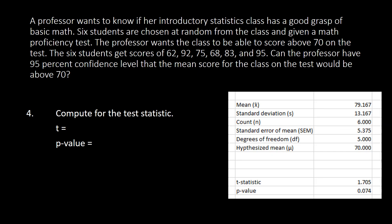Okay, so we're done with the computing for the test statistic using Excel. And we have the data information here. So all we have to do is to supply. We've got our t-value, which is 1.705. I rounded it off to a thousandths place or three decimal places. And our p-value is 0.074.